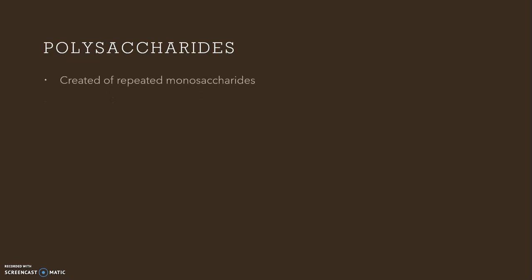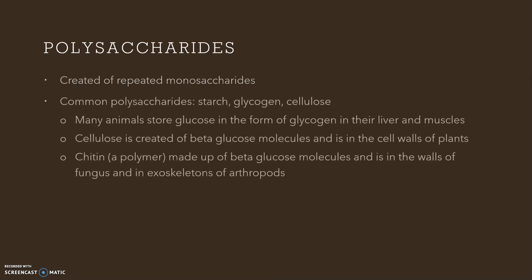Now let's talk about polysaccharides. Polysaccharides are basically made up of repeated monosaccharides. Some examples of common polysaccharides are starch, glycogen, and cellulose. Many animals store glucose in the form of glycogen in their liver and muscles. Cellulose is created of beta glucose molecules and is typically in the cell walls of plants. Chitin is also a polymer made up of beta glucose molecules and is in the walls of fungus and exoskeletons of many animals.